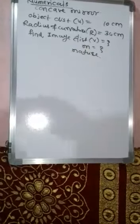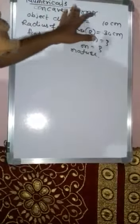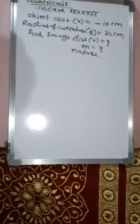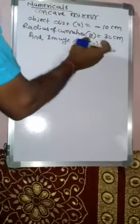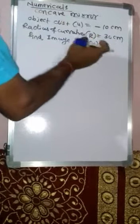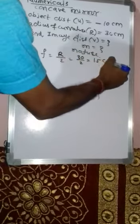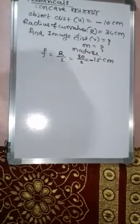From the given data we have to use the mirror formula. For concave mirror or convex mirror, the same formula is used — only the sign changes. In concave mirror, u is taken on the left side, so it is negative. The radius of curvature for concave mirror is also negative. Focal length f is R by 2, that is 30 by 2 equals 15 cm. But for concave mirror, focal length is on the left side, so f is minus 15 cm.